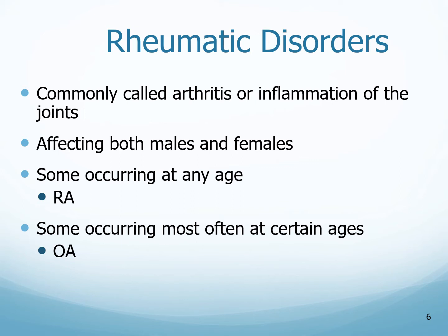Rheumatic disorders are commonly called arthritis, or inflammation of the joints, and we have heard this a lot. We always know somebody that has arthritis, somebody who complains of arthritic pain. When you turn on the television and see commercials, they are always talking about arthritis pain medications, some over-the-counter, some prescriptions. It will affect both males and females. Some can occur at any age — that is rheumatoid arthritis — and some can occur at certain ages, and that is osteoarthritis.